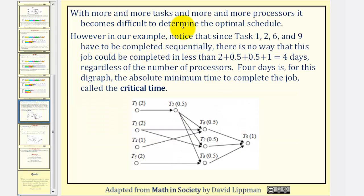With more and more tasks and more and more processors, it becomes difficult to determine the optimal schedule. However, in our example, notice that tasks one, two, six, and nine have to be completed sequentially, which we can see here: task one, two, six, and then nine.